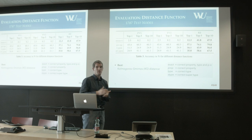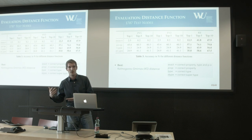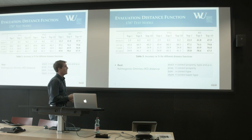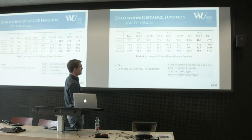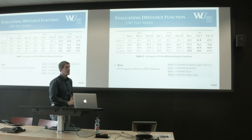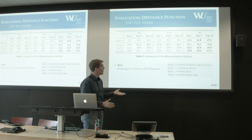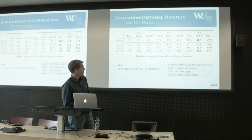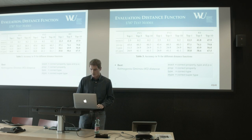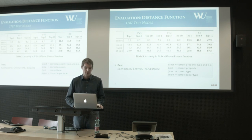The exact match means we have the right property, type, and PO pair. This small test made it clear that the Euclidean distance wasn't working well at all, while using distribution similarity worked quite well. This helped us select which knowledge base construction makes sense.